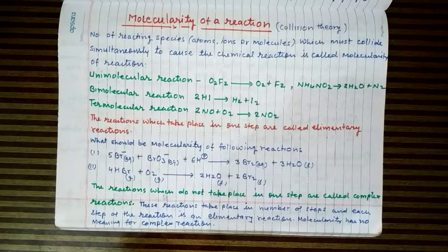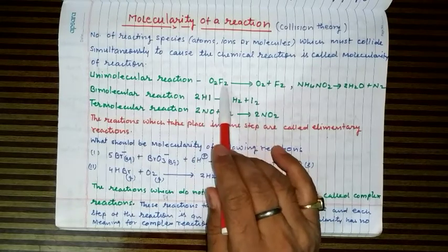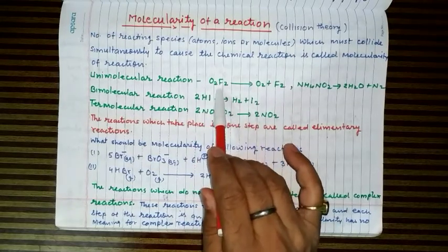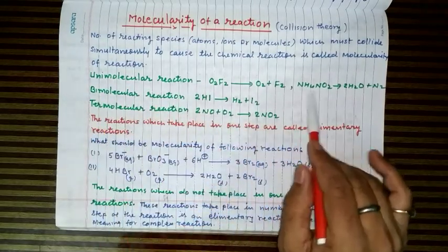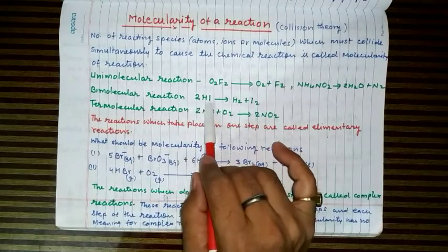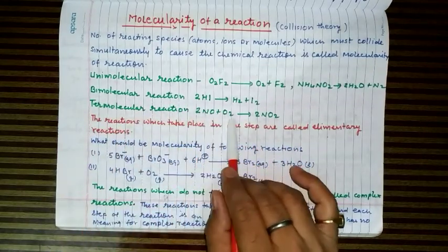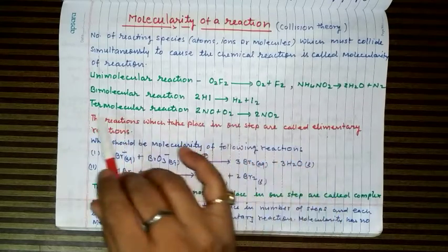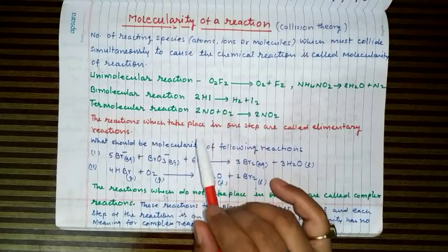In the first case, only one reactant molecule is involved; its stoichiometric coefficient is one, so its molecularity is one. Where two molecules of HI are reacting, the stoichiometric coefficient is two — this is a bimolecular reaction. Where three molecules are involved, it is a termolecular reaction. The question arises: can molecularity of a reaction be predicted by observing the stoichiometric coefficients of the reacting species?